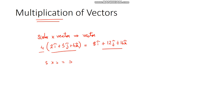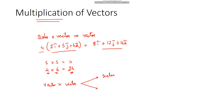So a scalar and a vector gave you a vector. When you multiply two scalars, you will get a scalar only — if I multiply 4 and 6, both are scalar quantities, you get 24, which is again a scalar. Now we will come to multiplying a vector with a vector, which might give us a scalar quantity or a vector quantity.